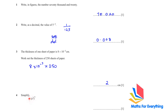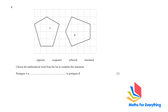Question 4: simplify x² raised to the power of 5. If you have a power inside a bracket and a power outside, you multiply the powers together. So the answer is x to the power of 10.